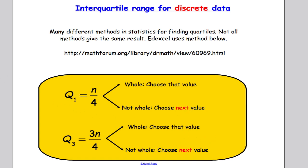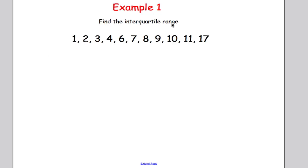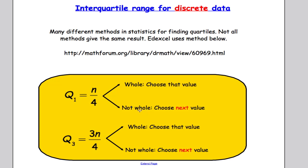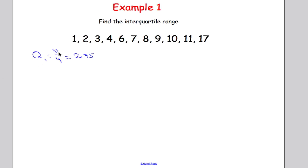Let's see it in action. I've got a pre-ordered data set and I want to work out the interquartile range. To find Q1, we take the number of values — there are eleven — and divide by four, which gives 2.75. Since it's not a whole number, I round up and choose the third value, which is three.